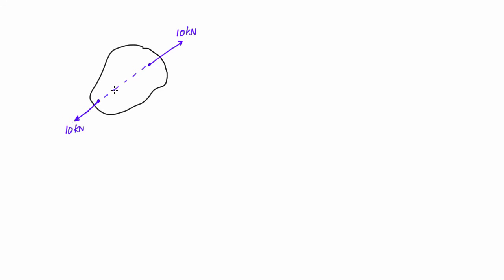We could actually put this 10 kilonewton force anywhere along that line. If we drew it in the same direction but not on that line of action, this object wouldn't translate but it would have the tendency to rotate because we'd be introducing a force couple, and this object wouldn't be in static equilibrium. And obviously if the two forces went in the same direction, this object wouldn't be in static equilibrium because it would have the tendency to translate.